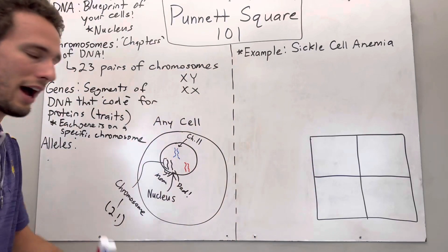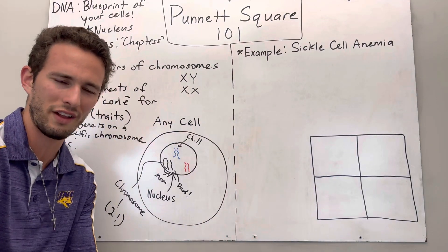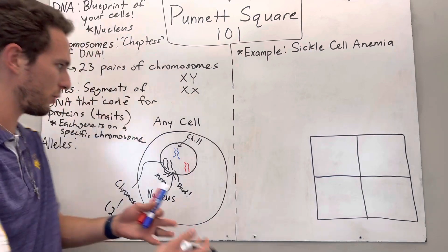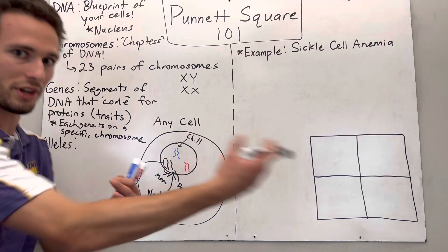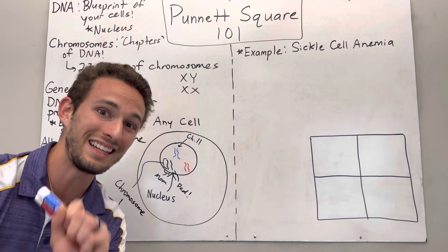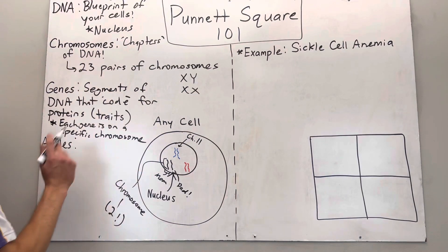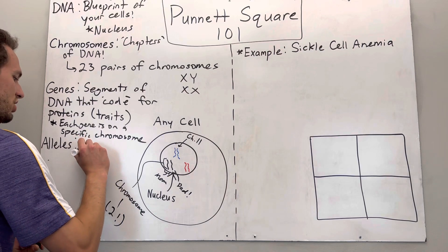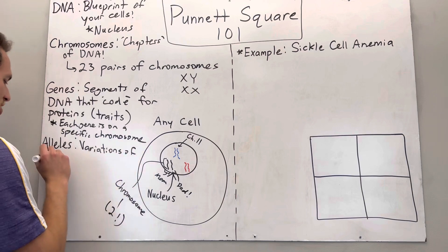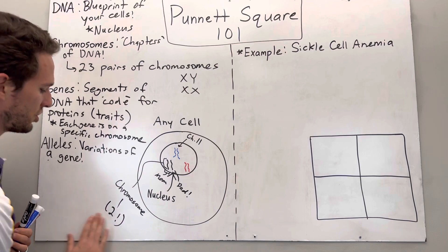Now I'm talking about traits — how do we determine what trait we have? That's the big question. How do we know what trait this person, made of 30 trillion cells, is going to show? That's where alleles come in. Alleles are variations of a gene.